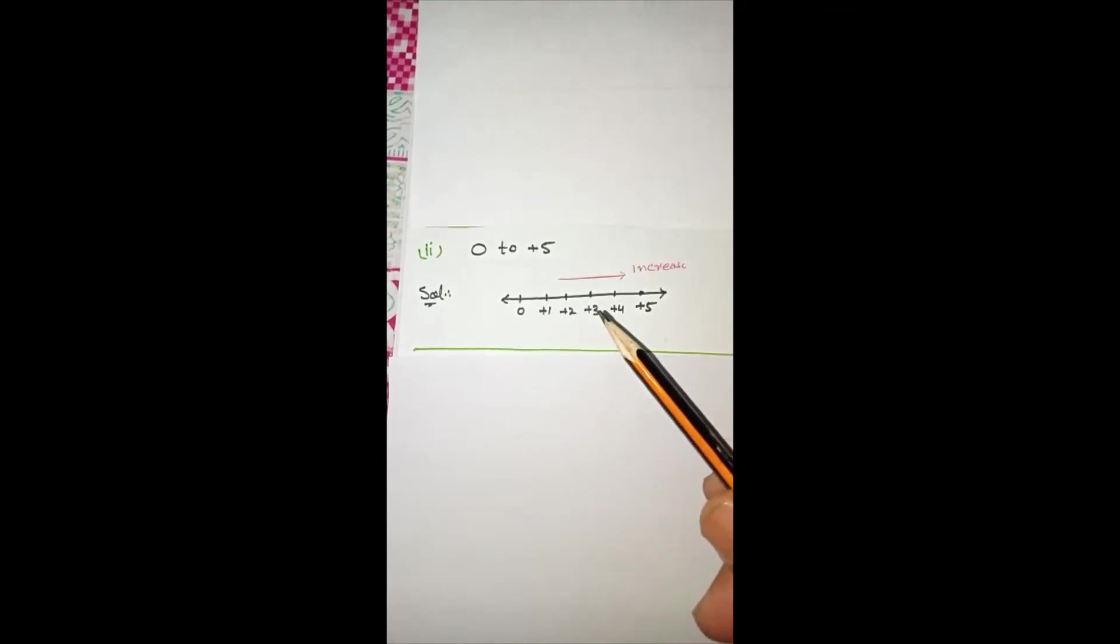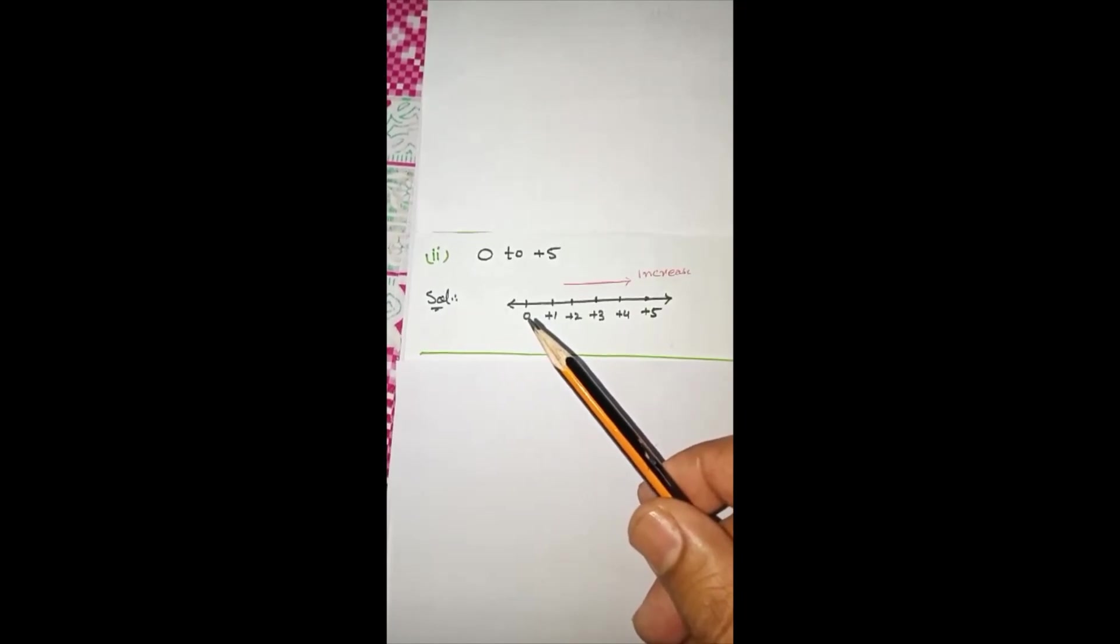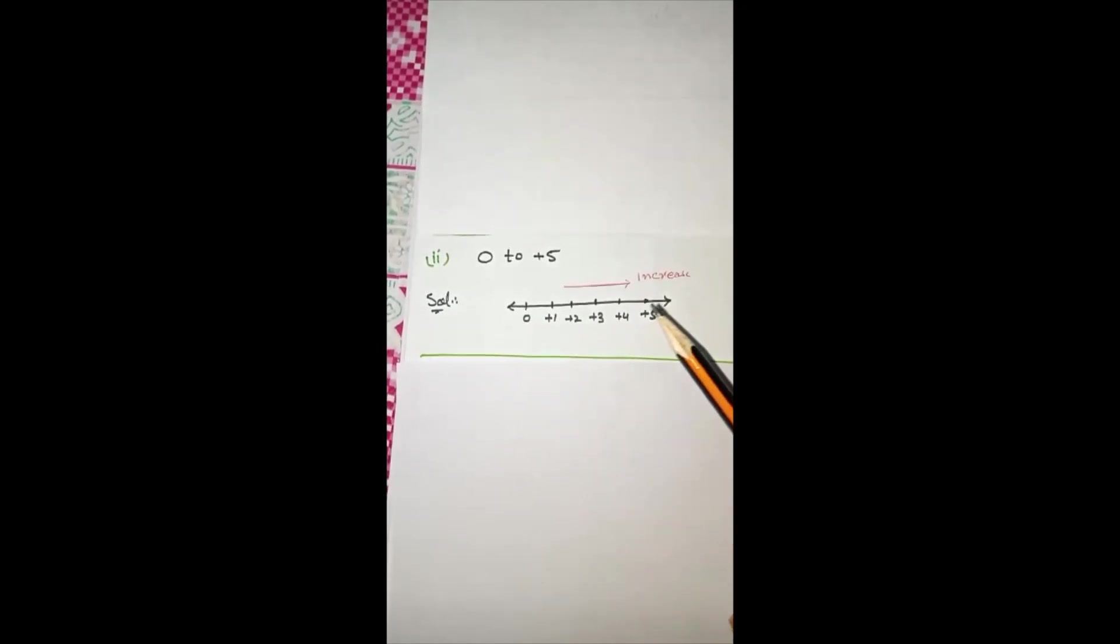Plus 1, plus 2, plus 3 up to plus 5. On the right side of zero, numbers increase. Now that is the solution.